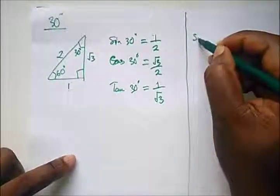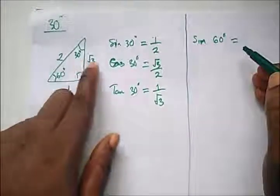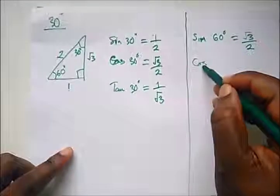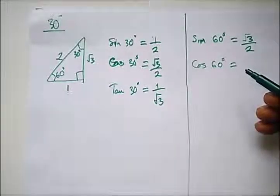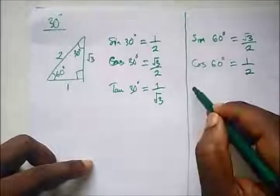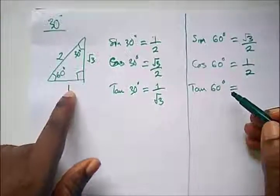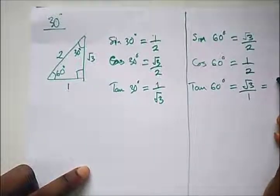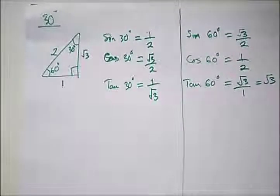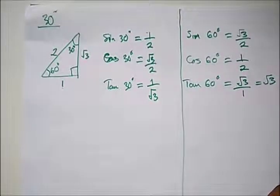For 60 degrees, using the same triangle: sine 60° equals root 3 over 2, cosine 60° equals 1 over 2, and tan 60° equals root 3 over 1, which gives us root 3. These are the special angles in trigonometry. Thank you for staying tuned to Destined to Win Tutorials — please like, subscribe, and share this video. Bye!